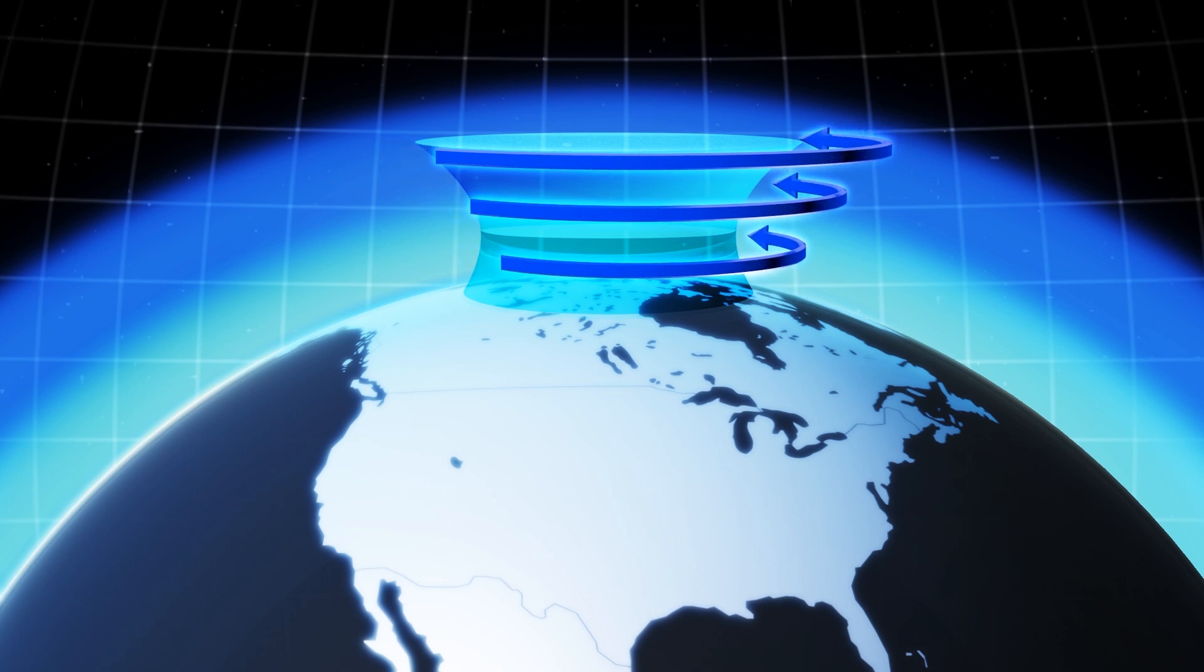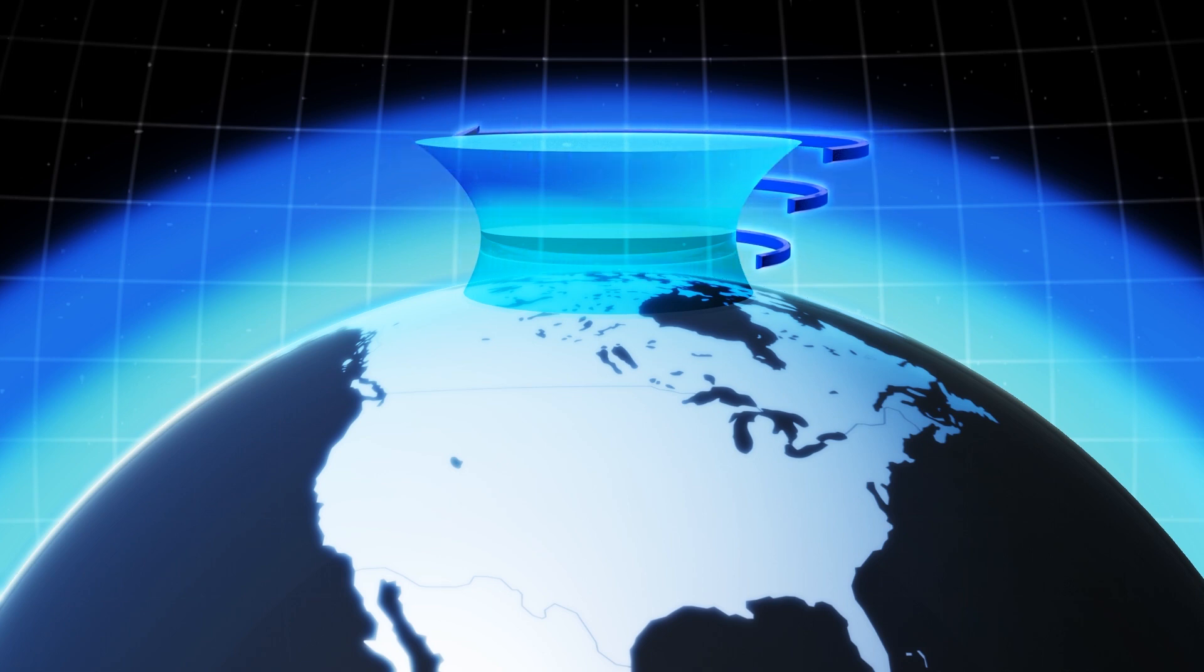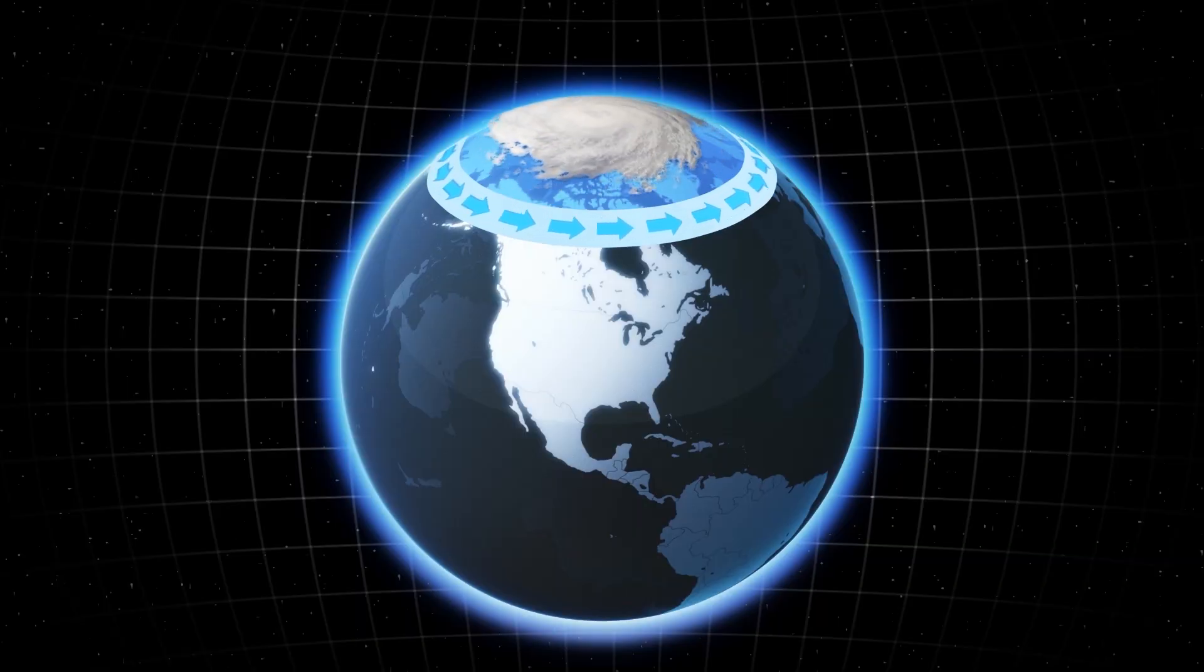This channel of air flows at a very high speed at the height of 30,000 feet on the boundary between the cold Arctic air and the warmer air south of the Arctic.